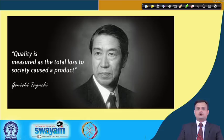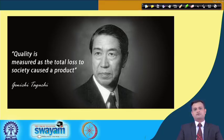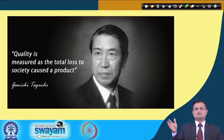Let us appreciate the quote from Genichi Taguchi: 'Quality is measured as the total loss to society caused by a product.' So when you are producing grade A, B, or C product and deviating from the target, you are imparting a loss to society.